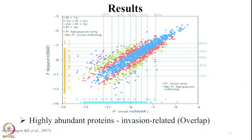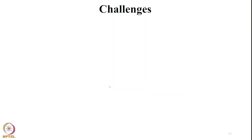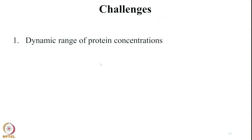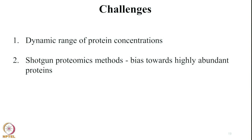When they tried to correlate between Plasmodium falciparum and Plasmodium vivax data, they were able to see that most of the proteins are correlating. The blue proteins in the diagonal show maximum correlation, and the ones towards the x-axis are more related to Plasmodium vivax, whereas the ones towards the y-axis are more related to Plasmodium falciparum. A challenge with Plasmodium vivax in this study was that a dynamic range of protein concentrations was present, causing highly abundant proteins to be mostly detected while low-abundance proteins were neglected — this is a shortcoming of shotgun proteomics, which is biased towards highly abundant proteins.